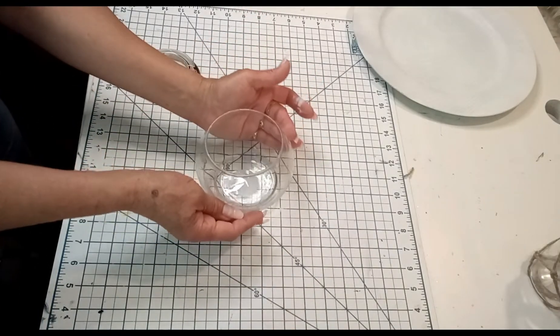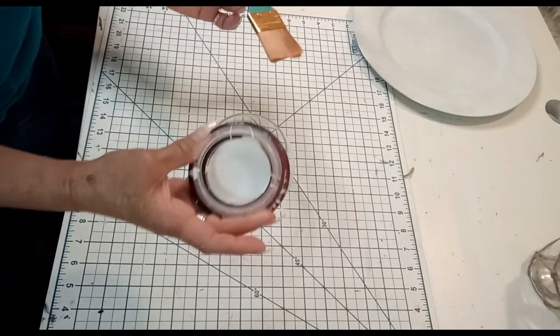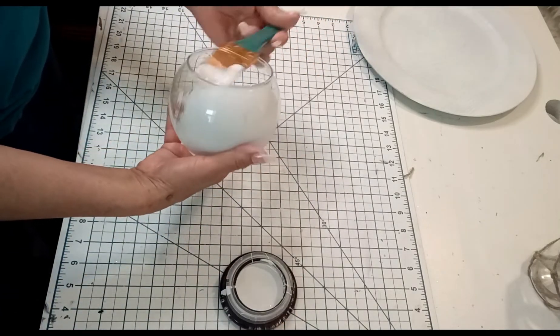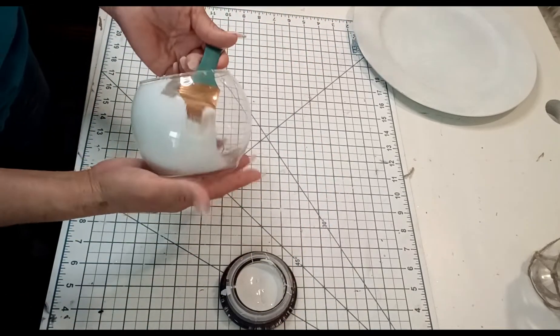Taking this fish bowl that I've had laying around for a while, I'm going to take some white chalk paint and paint the entire bowl on the inside.